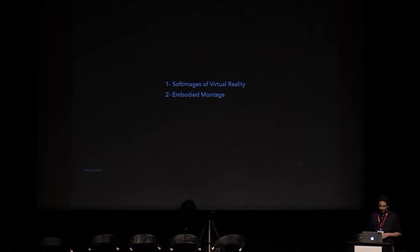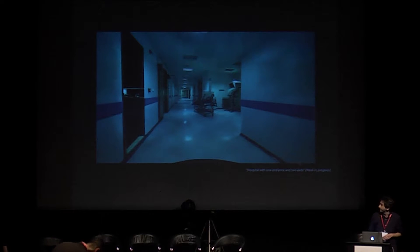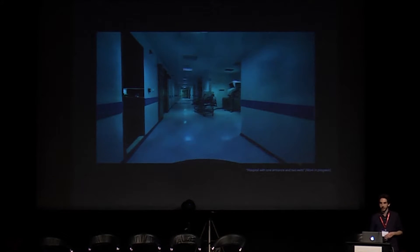I will talk about what the properties of these images are, and I will offer a creative technique for real-time 3D virtual reality works: embodied montage. So let's start with soft images. This image is from a real-time VR project that I'm working on. It's a recreation of a hospital in Istanbul. It's a project in development, but with this project we can go deeper into the production process and what these images are.